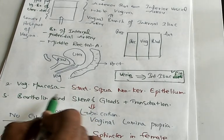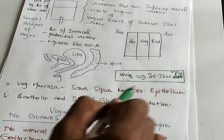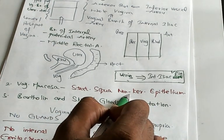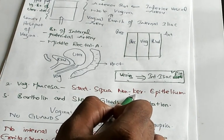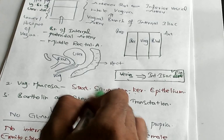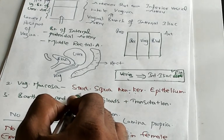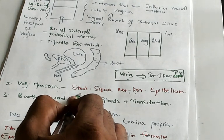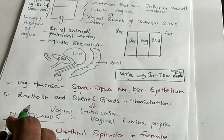Vaginal mucosa, what is the type of epithelium? Stratified squamous non-keratinized. You can't imagine keratin in the vagina. Why it is stratified? It has to bear the rough and tough friction. So that is the reason it should be stratified.